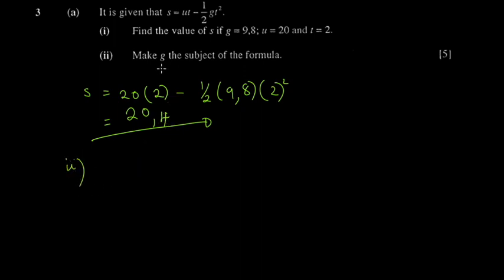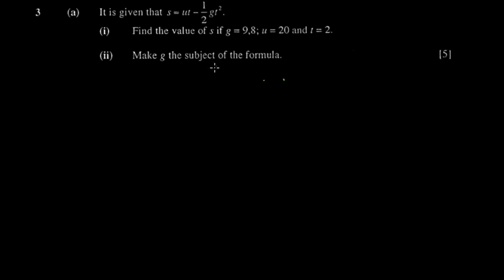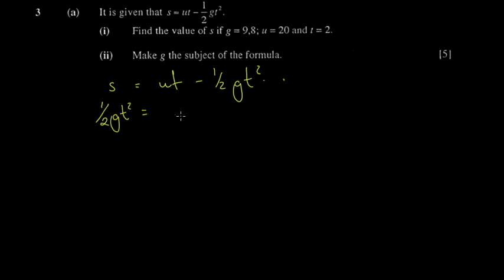On the second part you're asked to make g the subject of the formula. I'm going to wipe out everything here. So you have s equals ut minus half g t squared. This is simply a rescue operation — change of subject means rescue g, have g on one side and g should be alone. So we take the half g t squared term to one side and transpose s to the right-hand side.